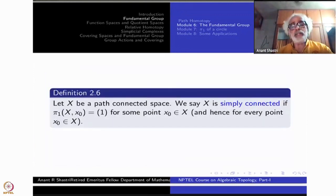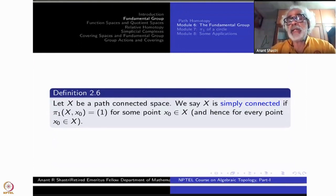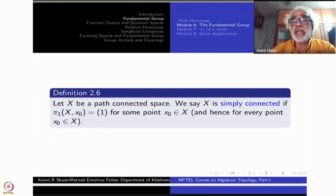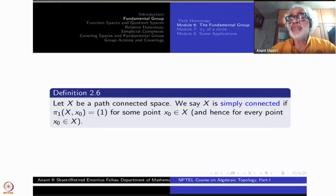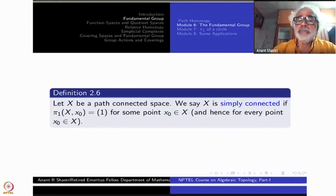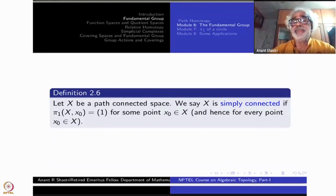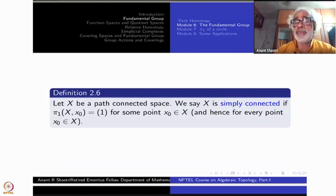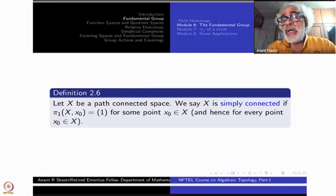Let X be a path connected space. The modern definition of simple connectedness: the fundamental group π₁(X, x₀) is the trivial group consisting of one single element. This may hold at one point, but then it holds at all points because at all other points the group is isomorphic to the trivial group — so the definition is independent of what point you take for a path connected space.